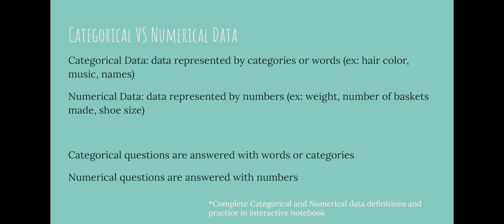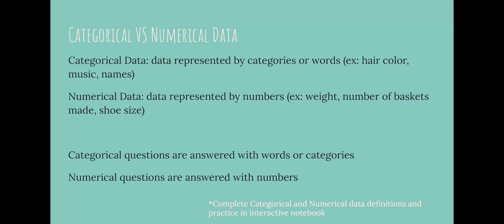All right, so categorical data is what it sounds like. It's data that's represented by categories — categorical categories or words. So hair color, music, names — those are all things that we answer using words. It's categorical data.